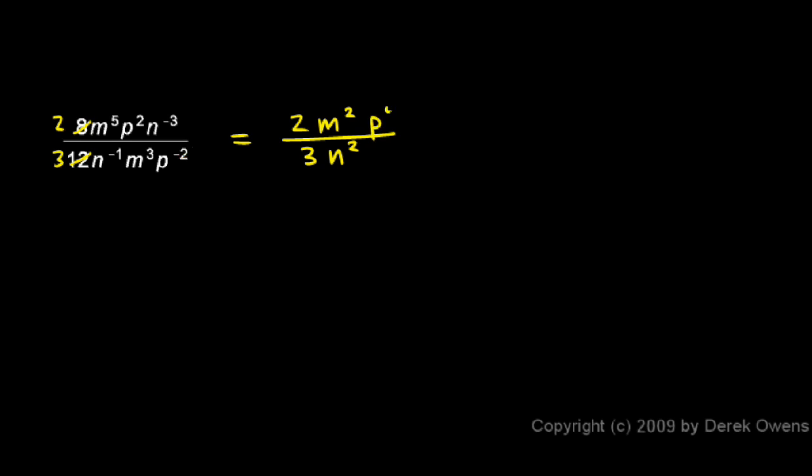So I'll write that in here, p to the fourth. And I'm done. 2m squared p to the fourth over 3n squared. That's my answer.